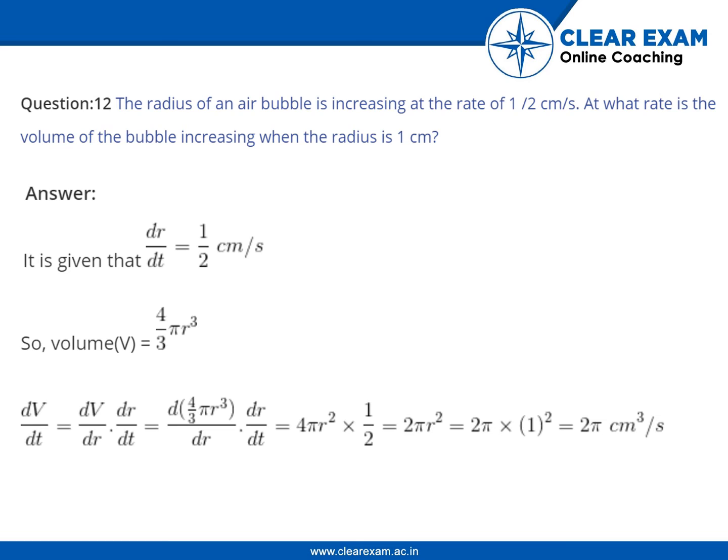dV by dt is equal to dV by dr into dr by dt, which is equal to d of 4 by 3 pi r cube upon dr into dr by dt, which is equal to 4 pi r square into